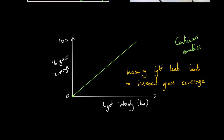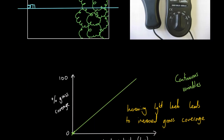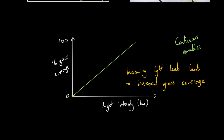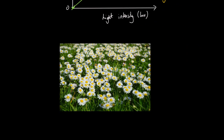Your results would probably show that increasing light levels leads to increased grass coverage, something that would look roughly like that. Of the two ways of using a quadrat, that's probably the easier one. That was the transect method, which is really for looking at variation with another variable like light levels.